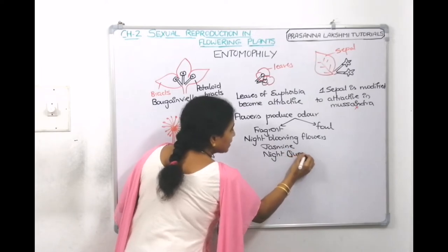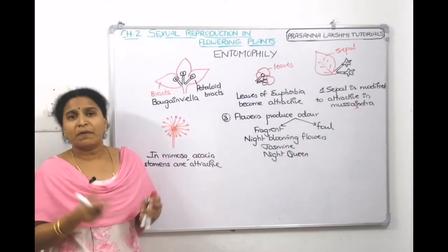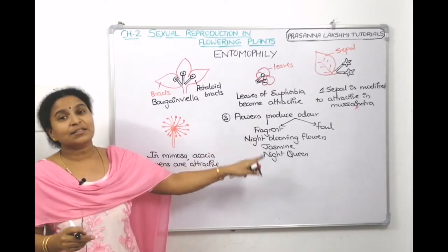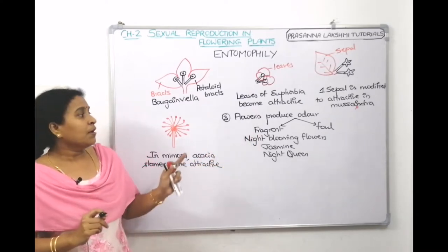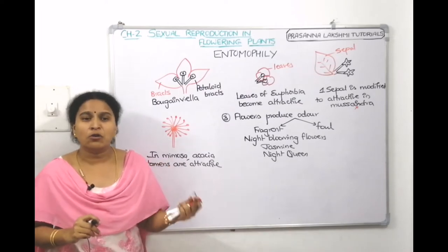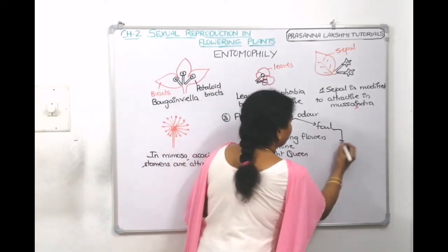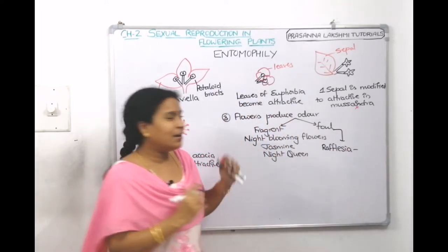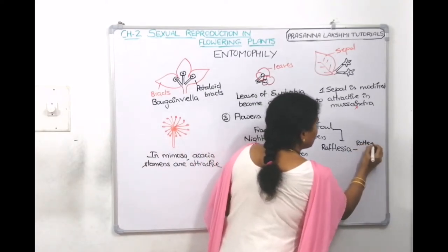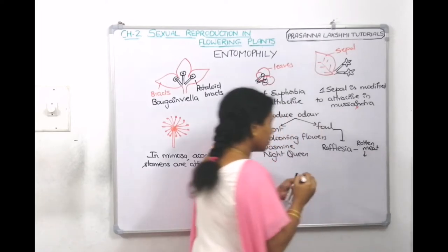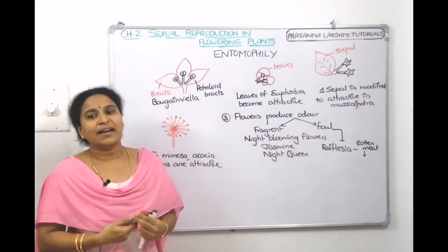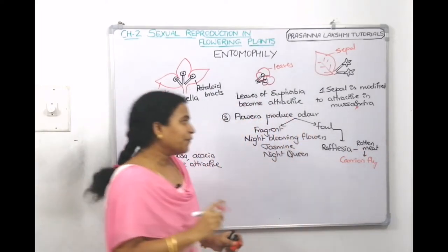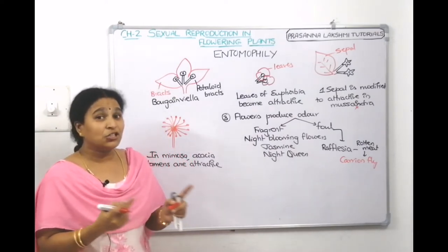Night-blooming plants like jasmine and night queen produce fragrant odor. Since they bloom in the dark where color is less effective, their fragrance guides insects to identify the flower and help in pollination. Other plants produce foul odors — for example, rafflesia produces a rotten meat smell, which attracts its pollinator the carrion fly.